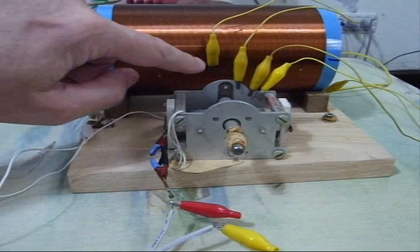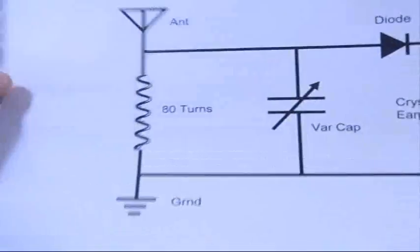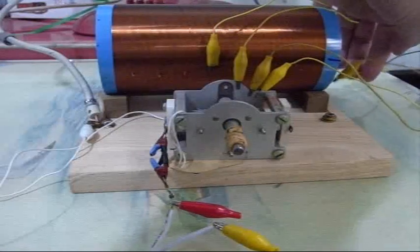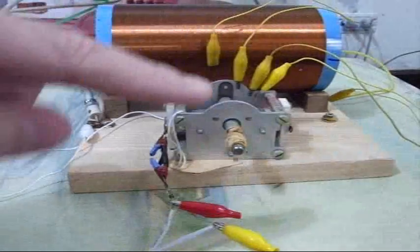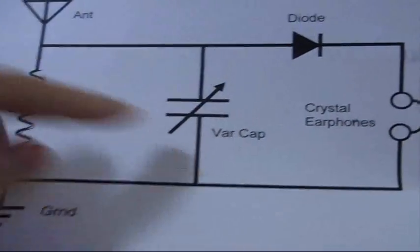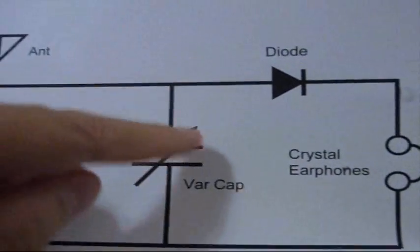And then it goes across 80 turns. So 20, 40, 60, 80 turns. 80 turns later it goes to the ground which is this yellow wire. All these yellow wires connect back here. They also connect to the ground. You can see the ground connects to the variable capacitor.